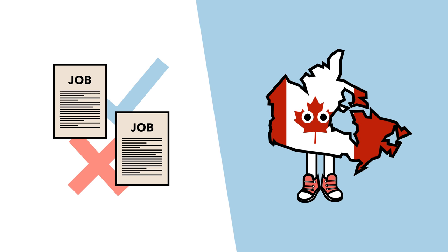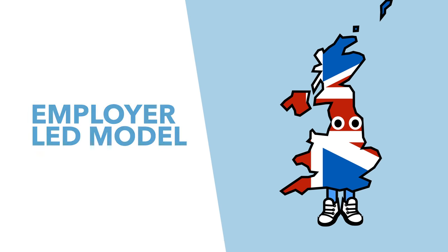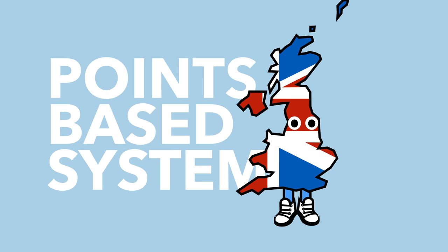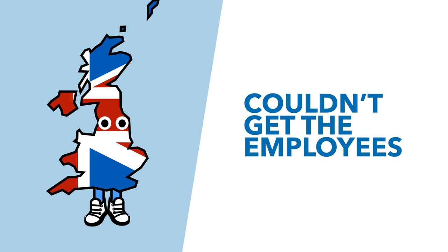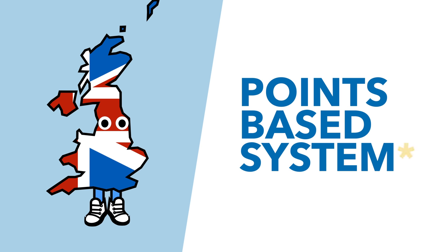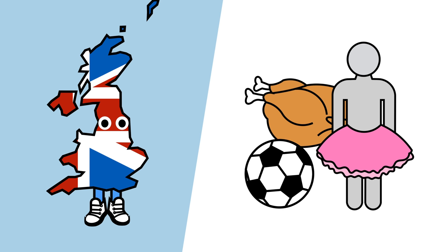Essentially both countries began weighting their application process towards a more employer-led model, like the UK. A similar thing happened in the UK when the system was first introduced in 2008 — businesses complained they couldn't get the employees they needed, and special exemptions were created for a whole range of sectors, with special treatment for butchers and ballet dancers, and no requirement for footballers to speak English.